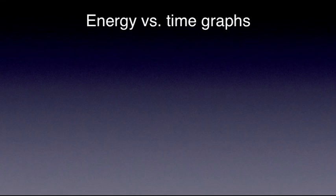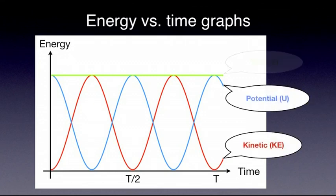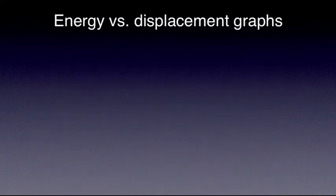The graphs on the screen show how kinetic and potential energies vary in time. At any point in time, the sum of the two has the same value. There is another way of visualizing the continuous change of energy from kinetic to potential and the other way around.